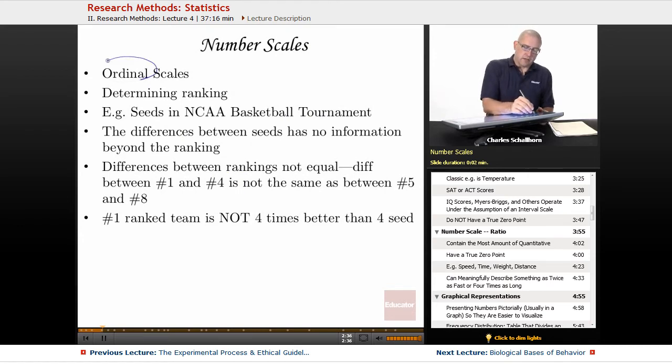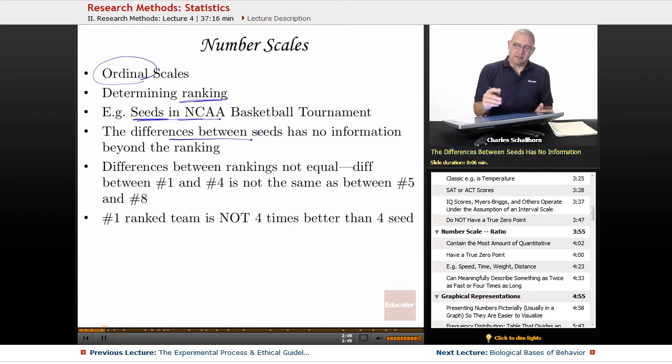Another number scale is ordinal. And this is going to be ranking. And if you're a basketball fan or a football fan, but especially basketball, the prime example is going to be the seeds in the NCAA tournament. The differences, however, with the seeds is that the ranking is all you have because the rankings are not equal. The difference between number one rank and number four rank is not the same as between five and eight. So there's no independent specific mathematical value. It's just a ranking. So ordinal equals ranking.